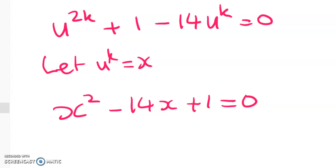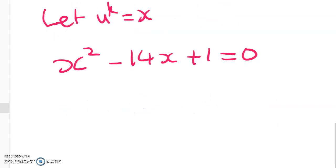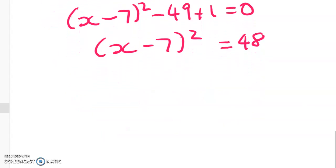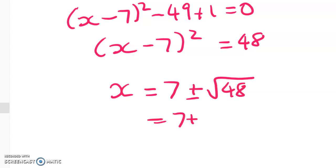So you can solve that how you want. You can do completing the square which is what I did or you can do quadratic formula, but doing completing the square gets me this: x minus 7 squared minus 49 plus 1 is equal to 0. So I get x minus 7 squared is equal to 48. So this is looking interesting. x is equal to 7 plus or minus root 48 which is equal to 7 plus or minus 4 root 3. So that's x.